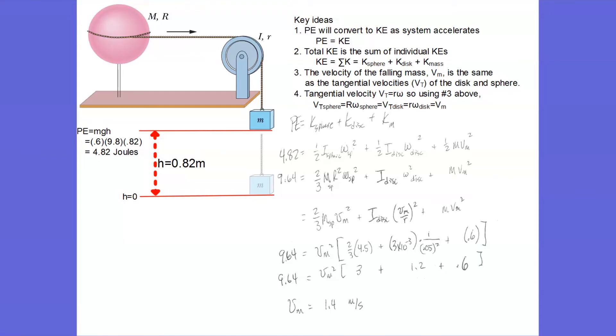What are the key ideas that we'll use in solving this problem? Well, as this mass m falls, its potential energy is going down, right? Where does that energy go?